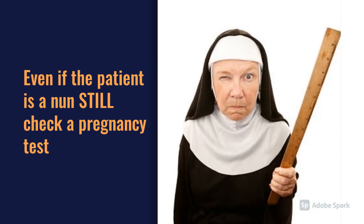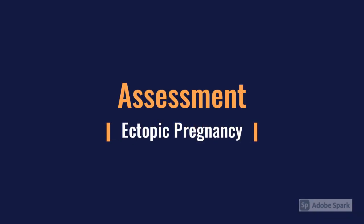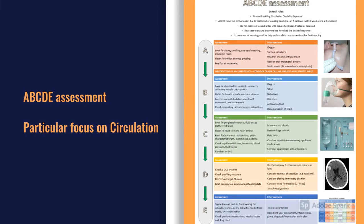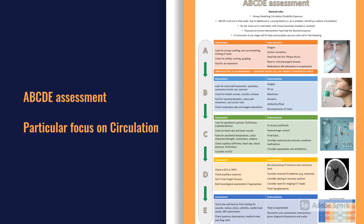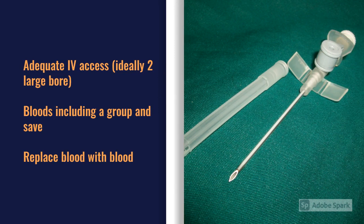When assessing these patients, as ever, we're going to advocate an A to E approach. We're going to be particularly interested in circulation — that heavy bleeding can cause patients to be hypotensive, which is a bad prognostic sign. Make sure they've got adequate intravenous access, take blood tests including a group and save, and make sure you're replacing blood with blood.